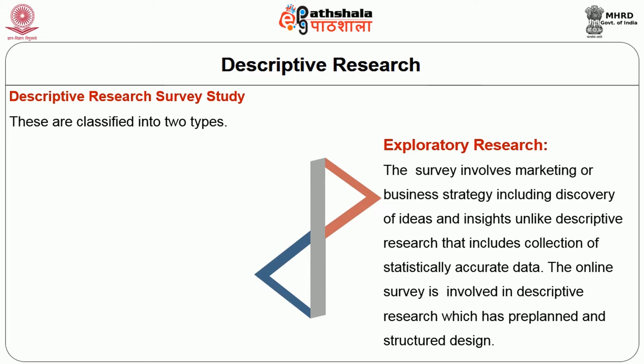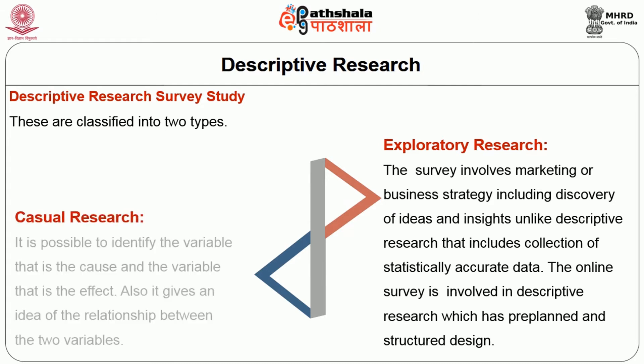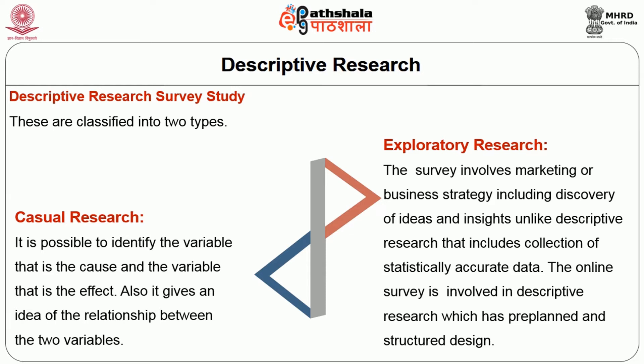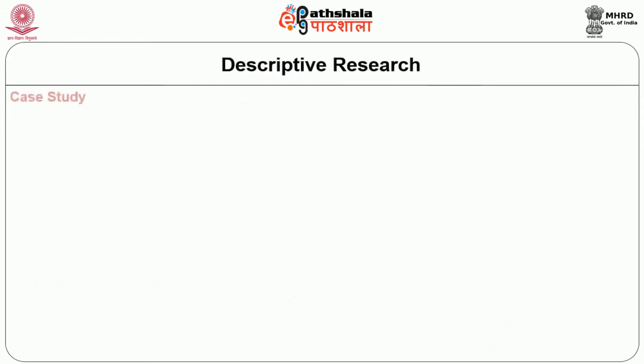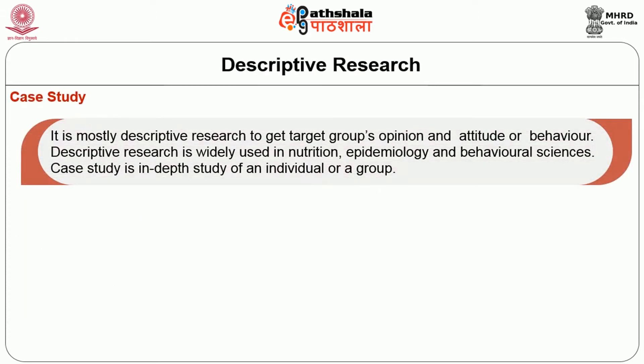By this, we get a clear opinion and attitude about the respondents. In causal research, it is possible to identify the variable that is the cause and the variable that is the effect, and it also gives an idea of the relationship between the two variables. In online surveying, it is mostly descriptive research to get the target group's opinion, attitude or behavior.